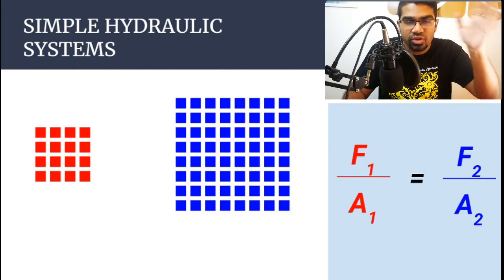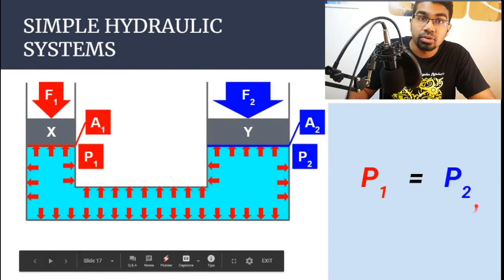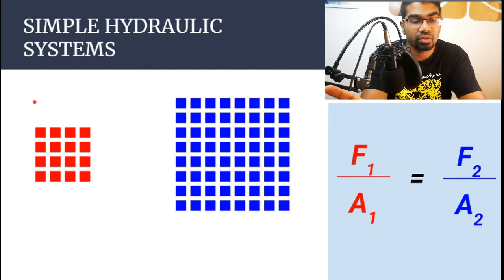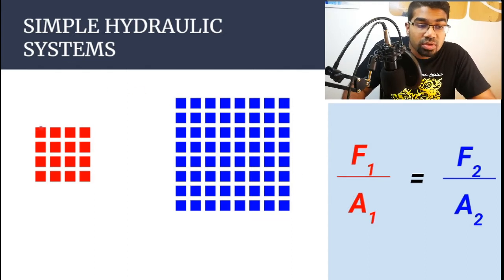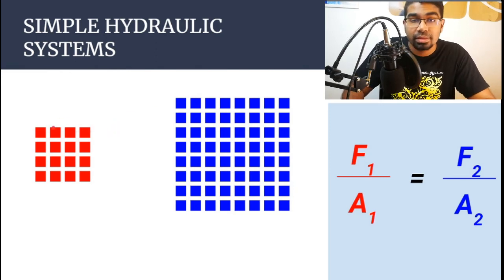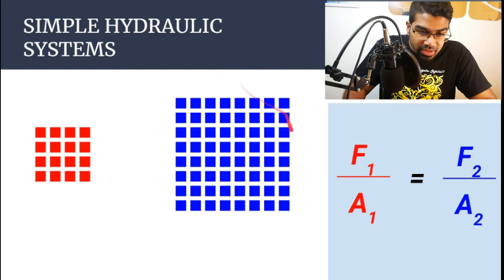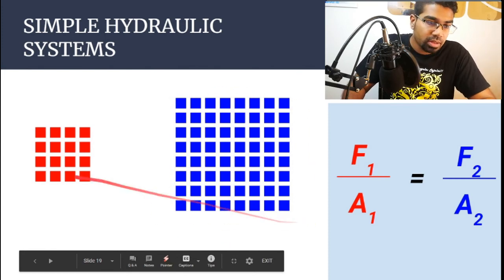Here is a simple way to visualize Pascal's Principle. The key thing to remember is P1 equals P2 — the pressure is equal, but the force is different. Treat one square as one unit area. The force applied to each square is the same for both sides — that is pressure. However, the area on the right side is much larger, so there are more squares. Even though the force on each square is the same, the greater number of squares means a larger total force is generated on that side.